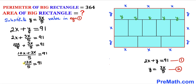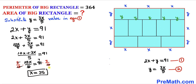Let's multiply both sides by the reciprocal 5/13 to solve for x. The 13s cancel and the 5s cancel, so x = 91/13 × 5. Since 91 divided by 13 is 7, we get x = 7 × 5 = 35 units.